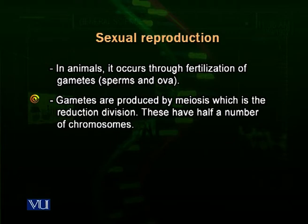Meiosis is a reduction division. When meiosis occurs, only the germ cells have the capability to undergo meiosis — all other body cells do not. When germ cells undergo meiosis, one germ cell divides into four haploid cells, meaning every cell has a haploid set of chromosomes — half the number of chromosomes.